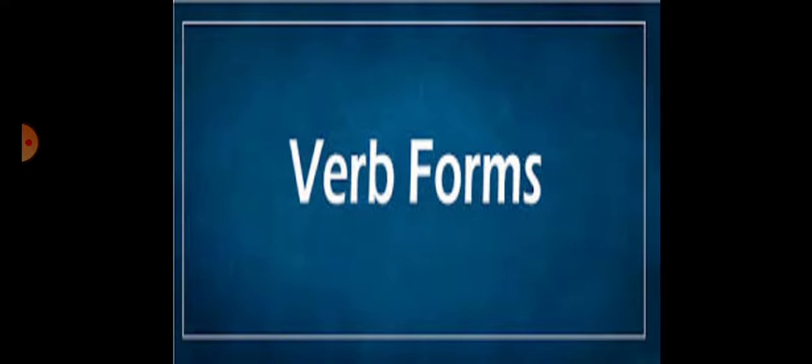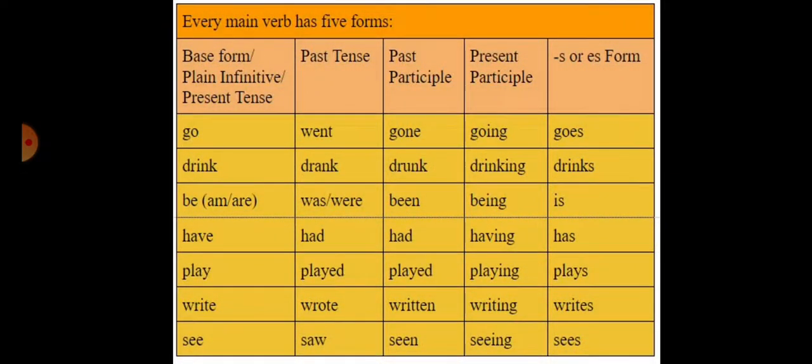Another thing which you should memorize as the basic English lesson of verb is the verb forms. As many of us get confused sometimes, students need to be alert here. The basic form of verb is the basic form, plain infinitive or present tense. When the verb is in present form: go, drink, be, have, play and so on.